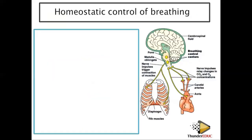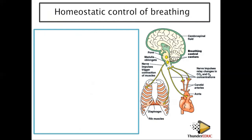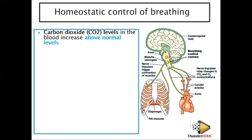The last part is the homeostatic control of breathing — how the body keeps gases in balance without having too much or too little. We mainly talk about carbon dioxide, which is not needed in the body. Receptors detect excess carbon dioxide and ensure it is removed. When carbon dioxide levels in the blood increase above normal, a response is triggered.